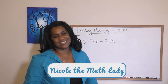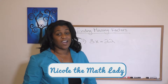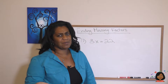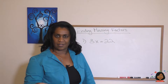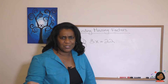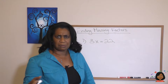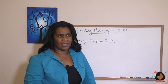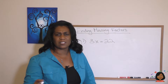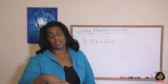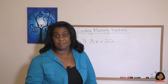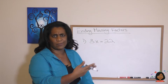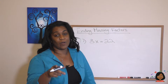Hi, it's Nicole the math lady. Today we're working on finding missing factors. Now you might say, 'Finding missing factors? Haven't we been doing that all along, like since lesson three?' Somewhere in the beginning of this book, right — missing factor, missing number in multiplication — we divide, we do the opposite to find the answer. So why is it all the way in this lesson?